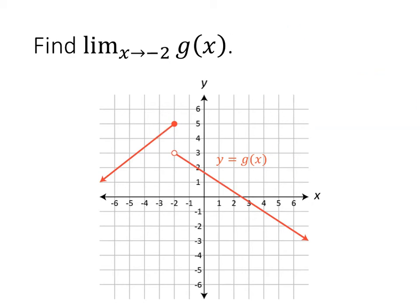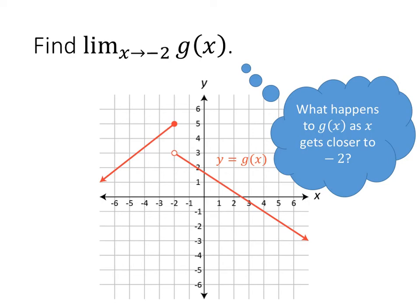One more problem: now we just want the limit as x goes to negative 2 of g. Notice there isn't any positive or negative sign after the negative 2 — it's just x arrow negative 2. The question being asked is what happens to g as x gets closer to negative 2 with no stipulations about whether we're above or below. That means we consider x-values approaching negative 2 from both sides. But the y-values go to different places: from below they go to 5, and from above they go to 3. Since there isn't one single y-value these are getting closer to, this limit does not exist.